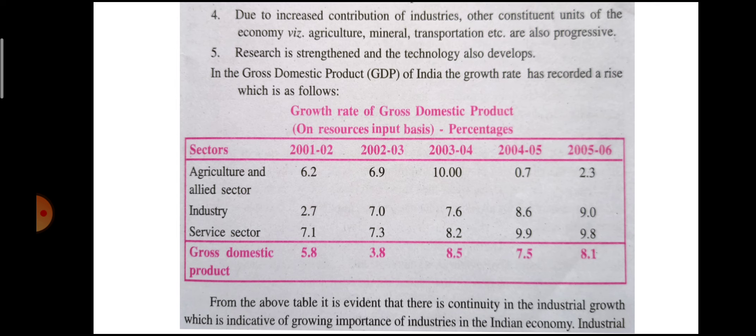Year-wise comparison of GDP growth: In 2002, GDP was 5.8%; in 2002-03 it went down slightly to 3.8%; in 2004 it was 8.5%; in 2004-05 it was 7.5%; and in 2005-06 it was 8.1%. All sectors are gradually showing growth.